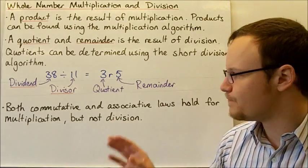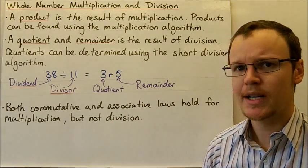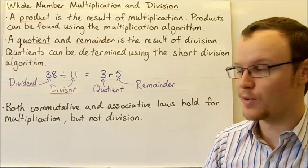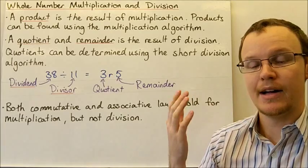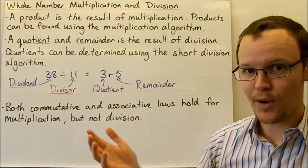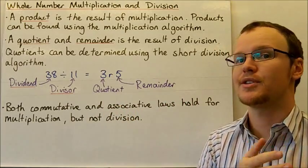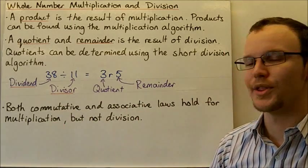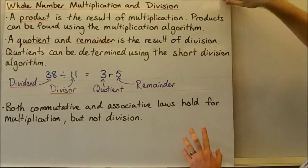The associative law says that we can multiply three numbers in any order. So if we had 2 × 3 × 4, we could do 2 × 3 first or 3 × 4 first. It doesn't matter. That's what these laws mean—the commutative law and the associative law.